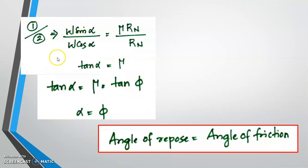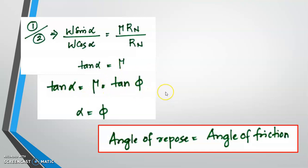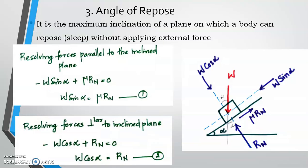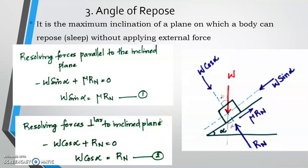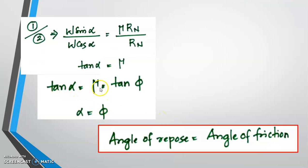W and W cancel, Rn and Rn cancel. Therefore mu equals sin alpha over cos alpha, which equals tan alpha. So tan alpha equals mu equals tan phi. This proves the relationship between the angle of repose and the coefficient of friction.